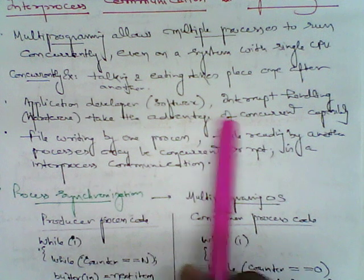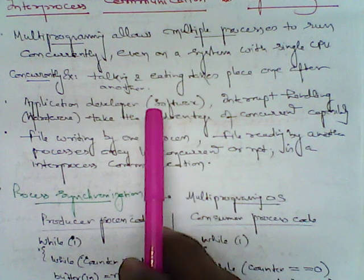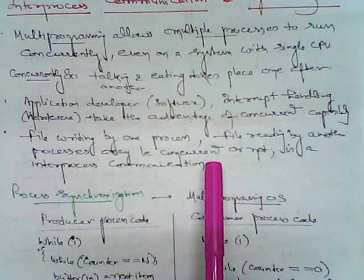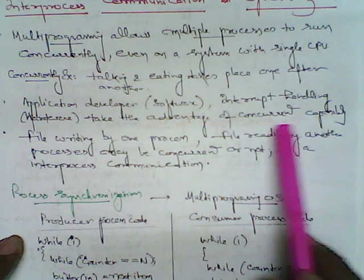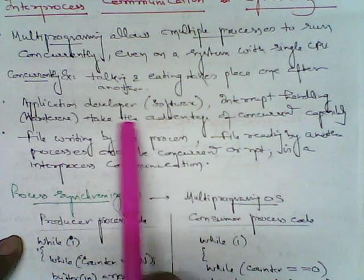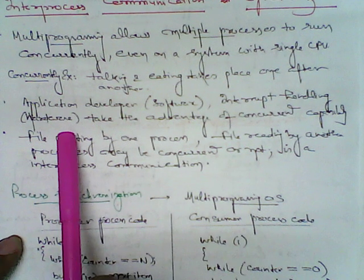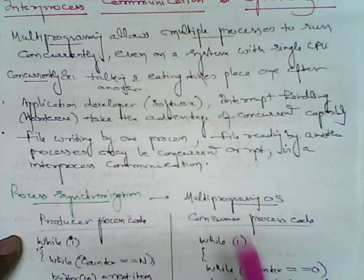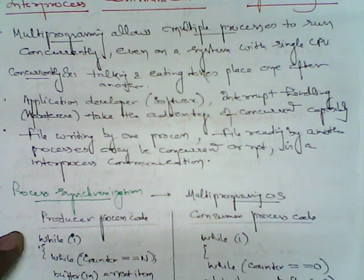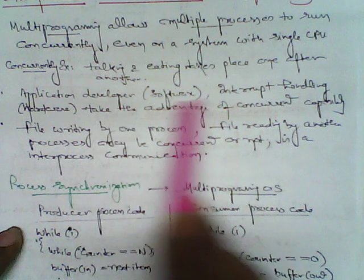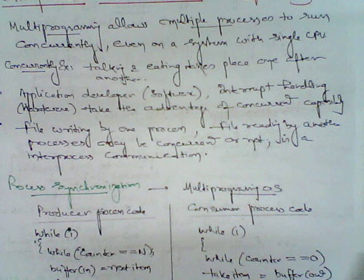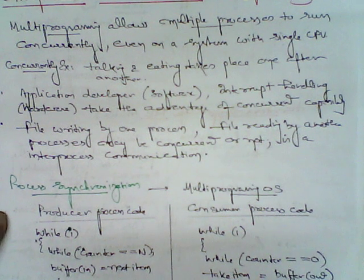Considering both a hardware and software approach: in the software approach as well as in the hardware approach — which is based on interrupt handling — they take advantage of concurrent capability. The software approach is better compared to the hardware approach because software has more dynamic flexibility to carry out concurrency effectively based on signaling conditions. Whereas in hardware, you don't have the flexibility to change requirements as and when needed.